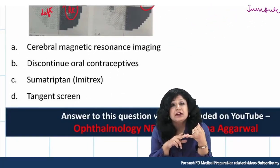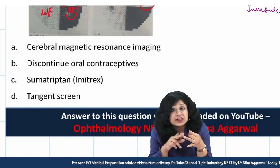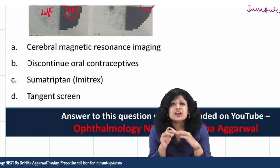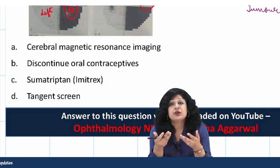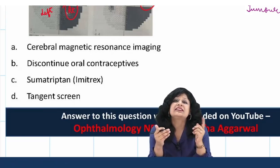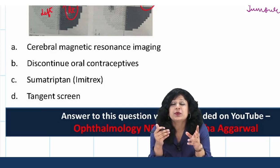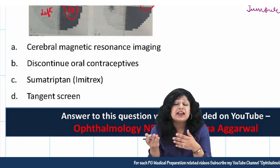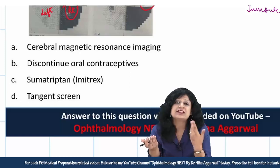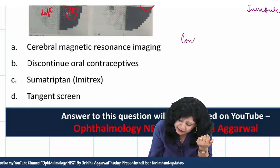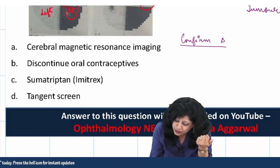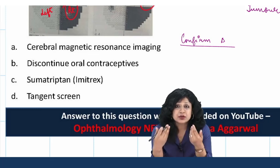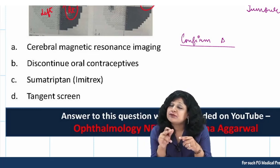The options are: cerebral MRI, discontinue oral contraceptives, give sumatriptan, or do tangent screening. They mention discontinuing oral contraceptives and sumatriptan because these are related to migraine — they are confusing you with that diagnosis. But I don't know whether it is migraine or not, so how can I say to discontinue oral contraceptives or prescribe sumatriptan? First confirm the diagnosis. Sumatriptan is a good anti-migraine drug, but I have to confirm first.